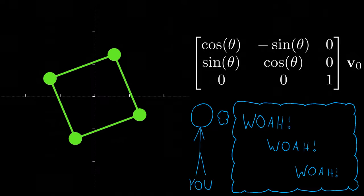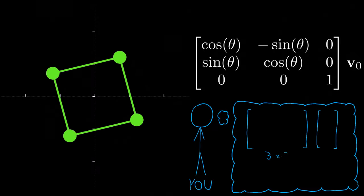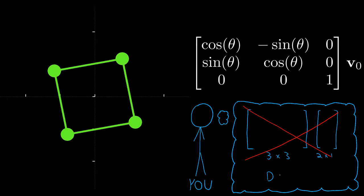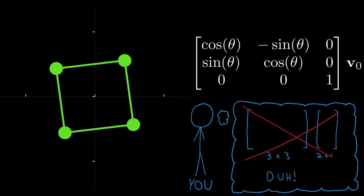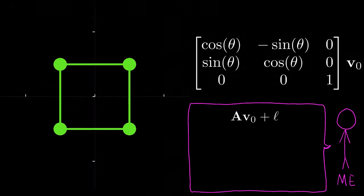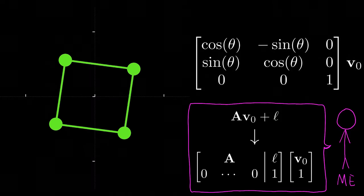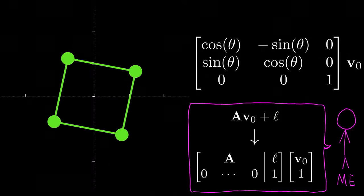But wait, I hear you say, that doesn't make any sense. Our input vector is 2x1. How could we possibly apply a 3x3 matrix to it? That's not how matrix multiplication works! And yeah, you're totally right. For this reason, people just assume that we're working on a plane at z equals 1 by appending a 1 to the end of the input and translation vectors.